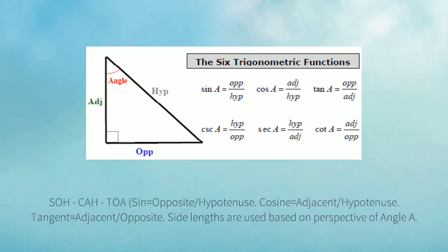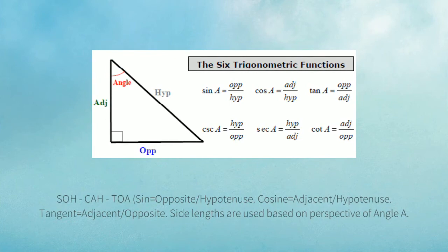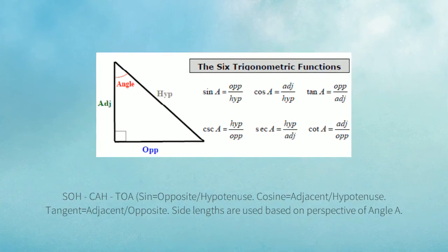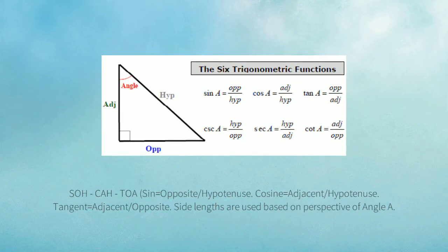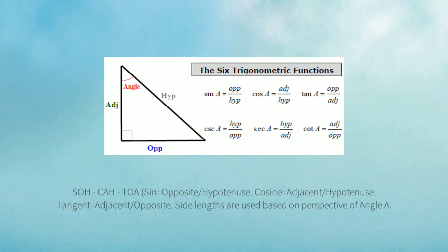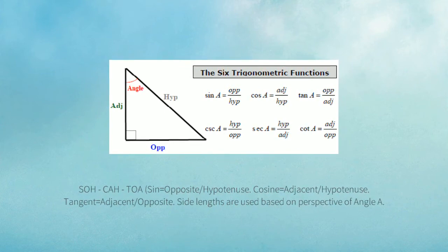The top row has the 3 main trigonometric functions. I use the saying SOHCAHTOA to help me. This says that sine is equal to opposite over hypotenuse. Cosine is adjacent over hypotenuse. And tangent is opposite over adjacent. These trigonometric functions only work on right triangles.